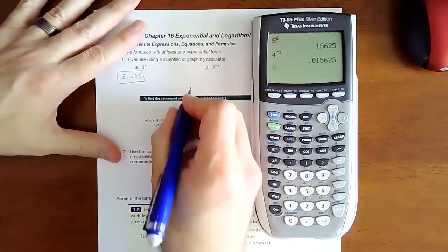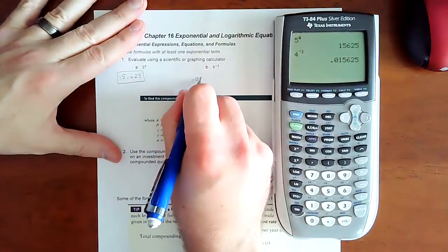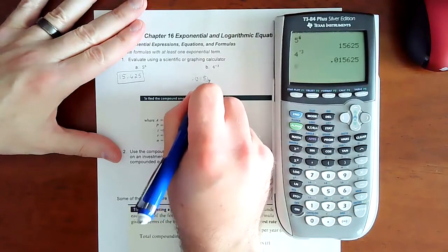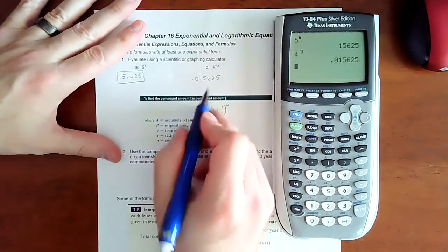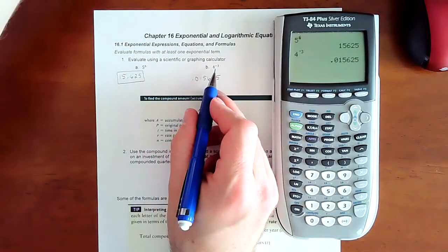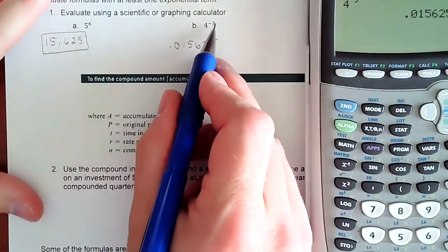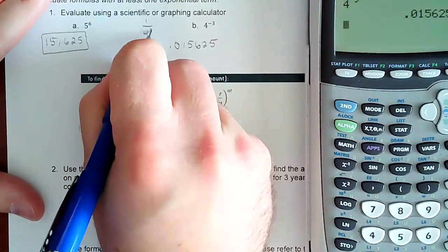So why did it go smaller? 0.015625. It's because a negative exponent is really going to take this four to the third power. You're still taking four to the third power, but it's moving it down into the denominator.